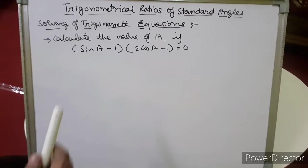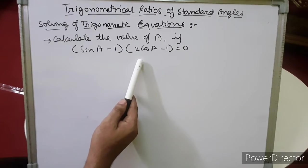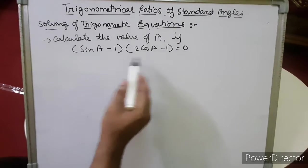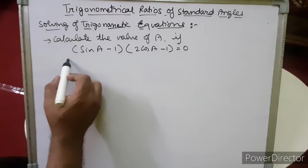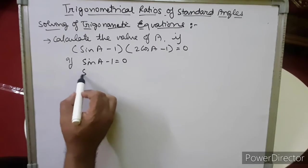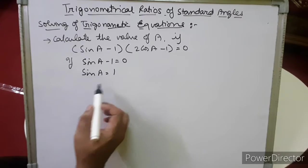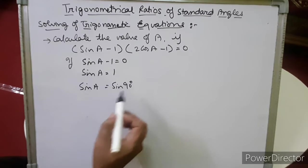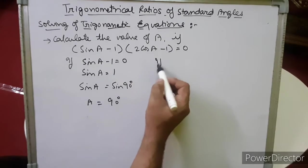Another sum: find the value of a if (sin a − 1)(2cos a − 1) = 0. In mathematics, if the product of two brackets is 0, then either bracket could equal 0. If we assume sin a − 1 = 0, then sin a = 1. The value of sin 90° is 1, so by comparing, a = 90°.